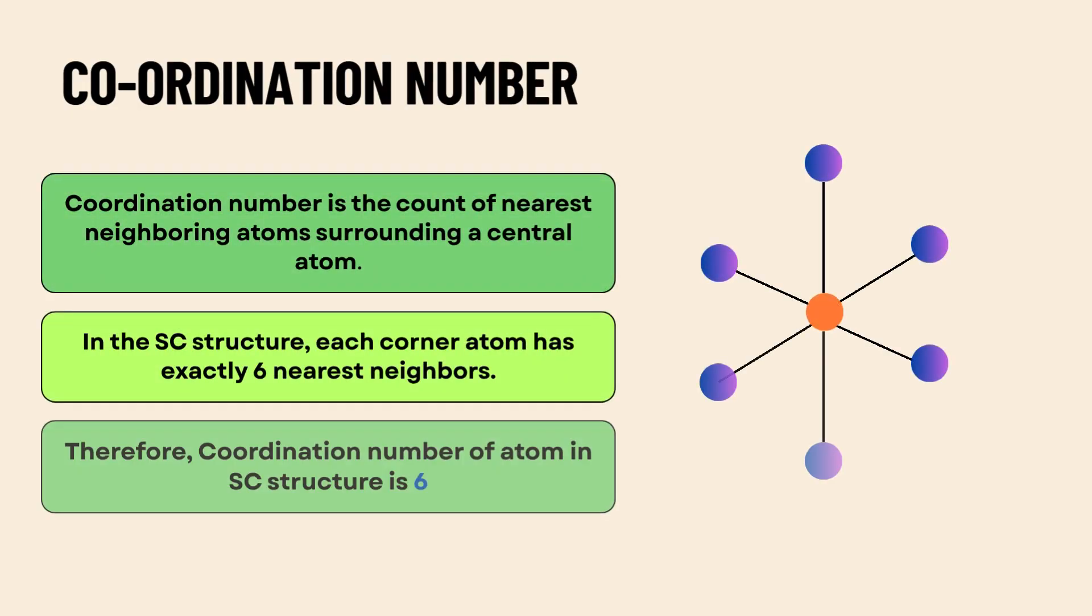The coordination number refers to the number of nearest neighboring atoms that surround a given atom. In a simple cubic structure, each atom is in contact with six adjacent atoms, one on each face direction: front, back, left, right, top, bottom. Therefore, the coordination number here is six. This number helps determine the stability and bonding characteristics of the structure.